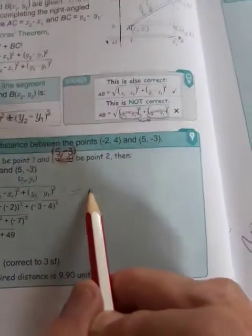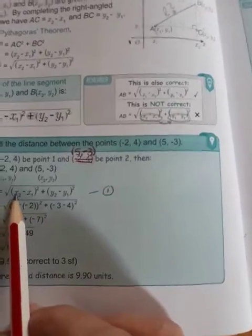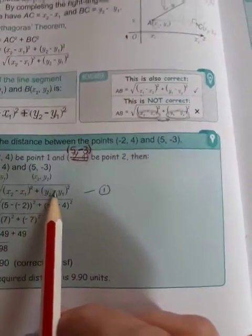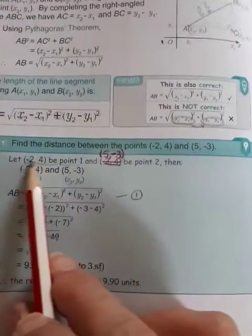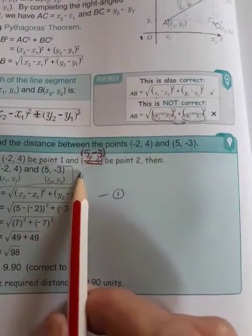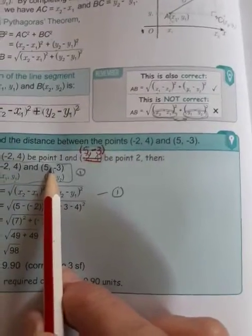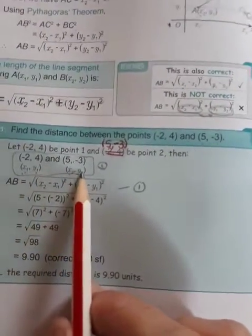So step number one, write down your formula. The formula is x2 minus x1 squared plus y2 minus y1 squared. And if you have written down your coordinates like this, which I want you to do, that is really step one, is to write down the coordinates and to label them as point 1 and point 2.